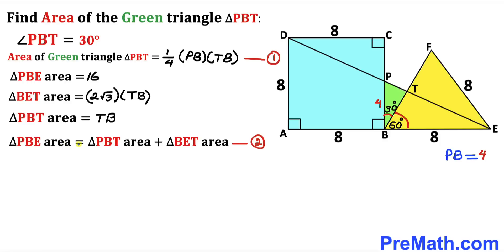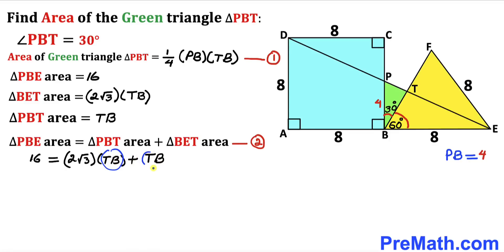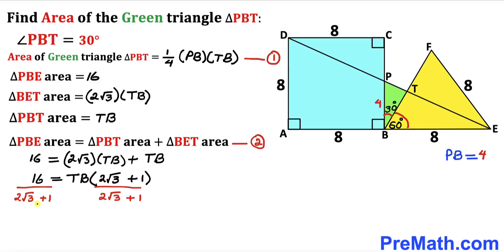Now let's substitute all these triangle areas into Equation 2. The area of triangle PBE equals the area of triangle PBT plus the area of triangle BET: 16 = TB + 2√3 · TB. Factoring out TB gives 16 = TB · (2√3 + 1). Dividing both sides by (2√3 + 1) gives TB = 16 / (2√3 + 1).